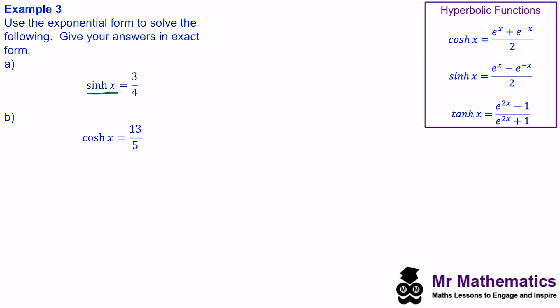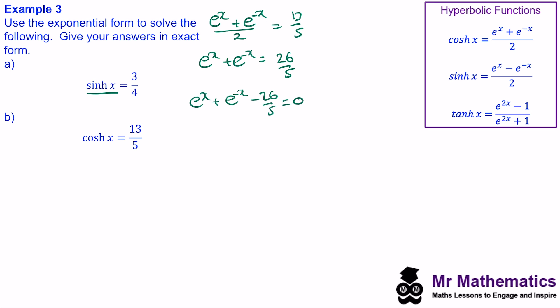Welcome back. The first thing we do is write cosh(x) in exponential form: (e^x + e^(−x)) / 2 = 13/5. Moving the division by 2 to the right-hand side: e^x + e^(−x) = 26/5. We then move the constant term to the left-hand side to equal zero, and multiply both sides by e^x. Adding the powers: e^(−x) × e^x gives e^0 = 1.